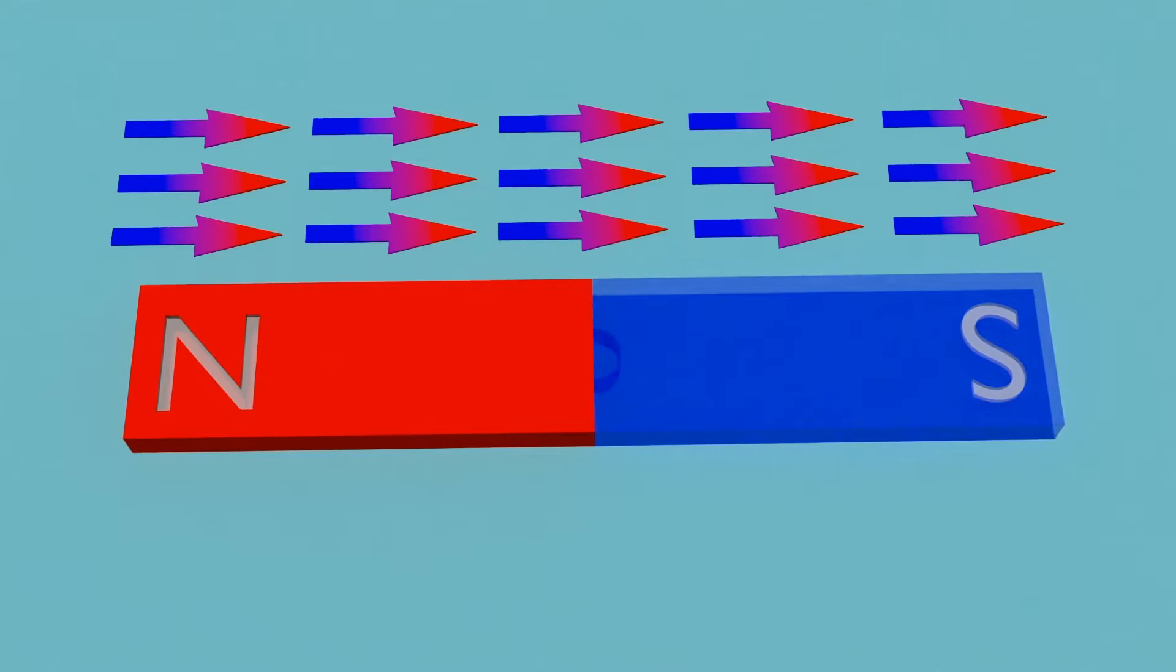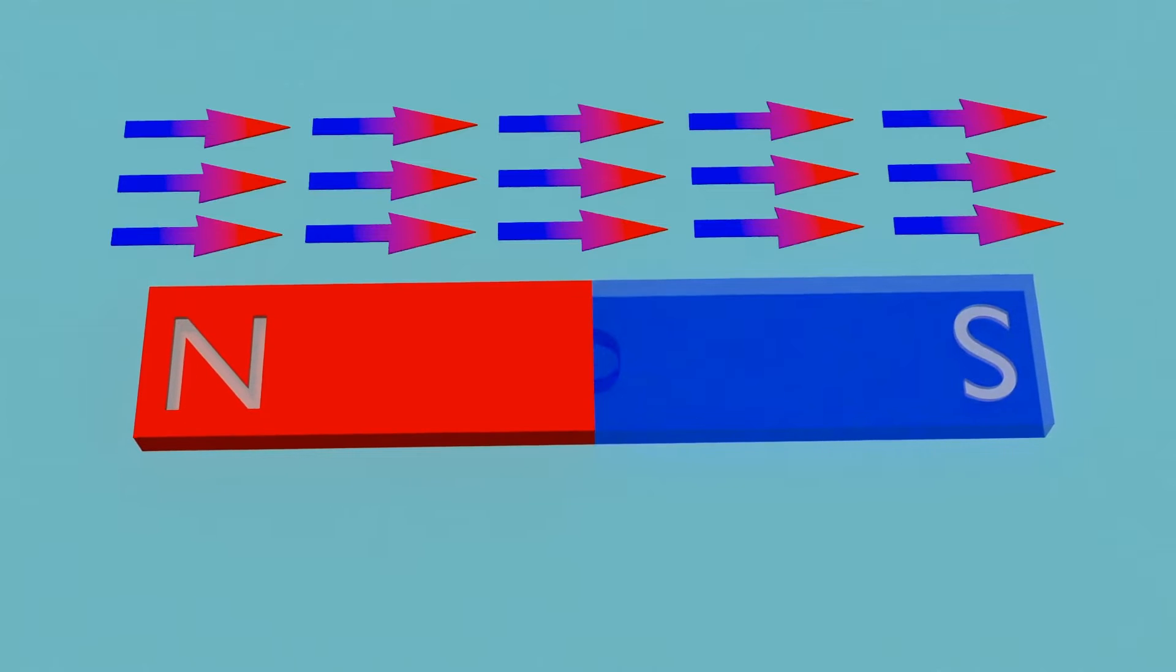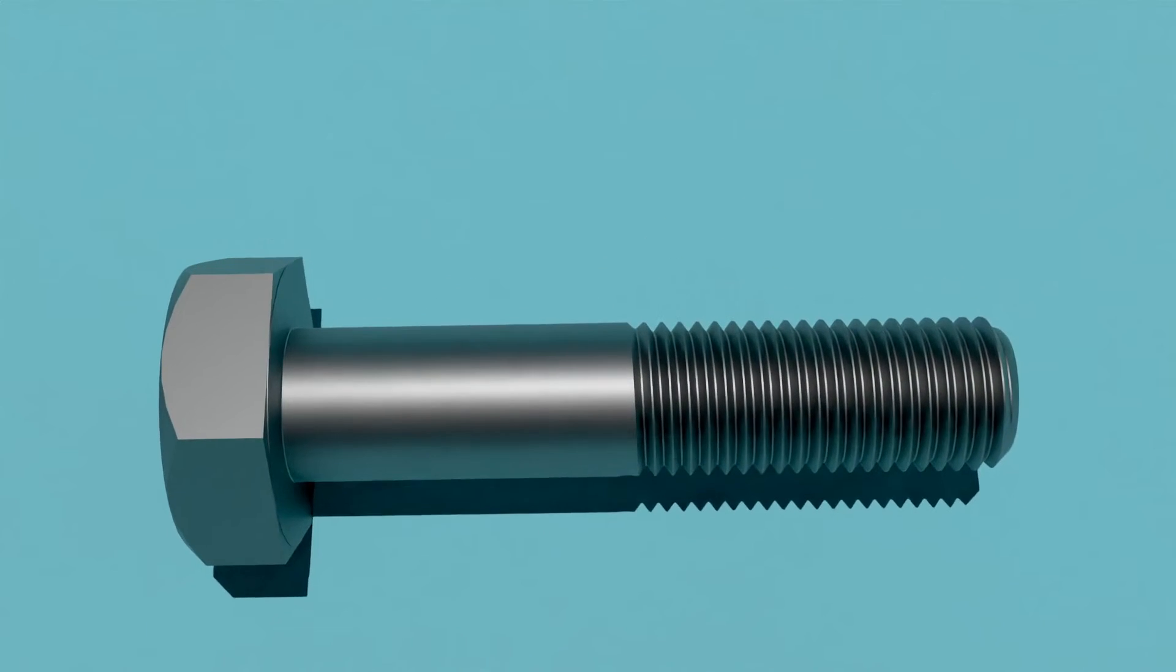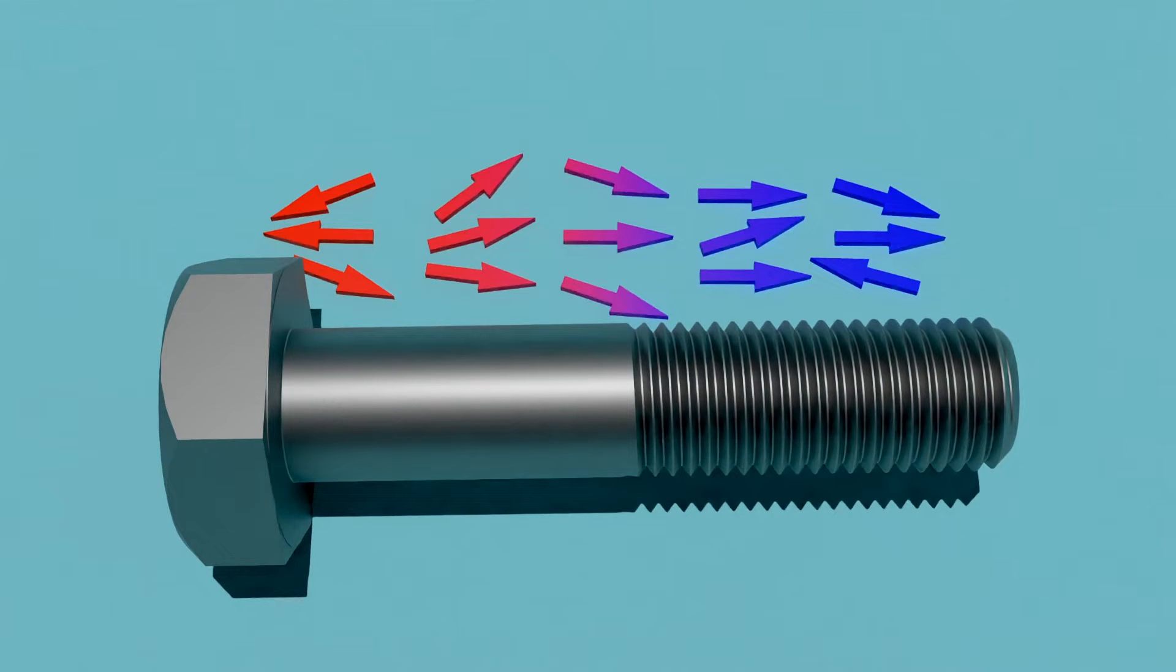These magnets have magnetic domains organized in a similar direction. Now this is a metal bolt which is not a magnet, but it also has magnetic domains that are not organized, or we can say they are facing in random directions.